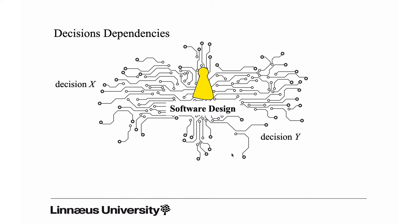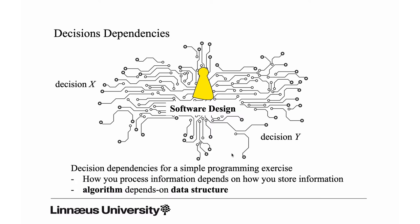So in that sense decision X restricts decision Y. Think about the simple programming exercise once more: how you process information depends on how you store information. Our decision on how to store the information creates a dependency to the decision for how we will process it. The true choice of algorithm depends on the data structure — some algorithms work much better on certain data structures compared to others.